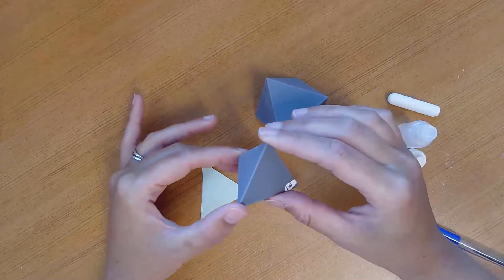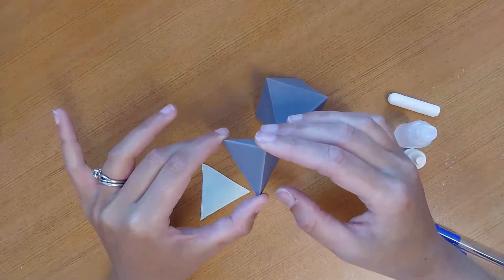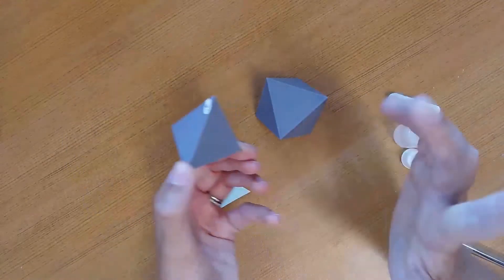And a tetrahedron has four faces, tetra meaning four, right? One, two, three, four. Four similar faces.